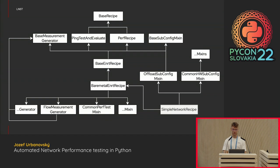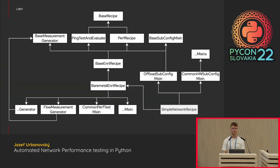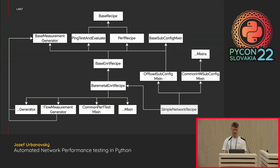Then we arrive at bare metal ENRT recipe, which by its name is a subset of topologies for non-virtualized setups — just bare metal. These are specific generators and configuration mixins required on bare metal hosts; for example, if you want to disable a setting in BIOS or configure something directly on the card, that's what bare metal brings. Finally we arrive at the recipe used in production: the simple network recipe, which implements all the specifics of its derived classes. We add more mixins in the form of offload subconfig mixin and common hardware subconfig mixin, which reduce code duplication further and allow us to explode configuration settings into metrics that may represent 32 or 64 different tests under a single recipe.